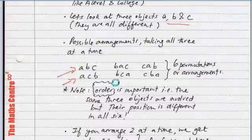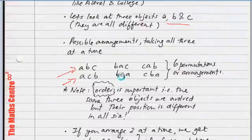One very important thing to note is that in permutations, order is important. You notice, the same three objects are involved, but their position, as far as the arrangement is concerned, is different in all six. For example, in BAC and BCA, you can see that the C and A are in different positions. Here, A is in the middle, here, C is in the middle. So, that's what I mean by, in permutations, order is important. It's a very important idea.